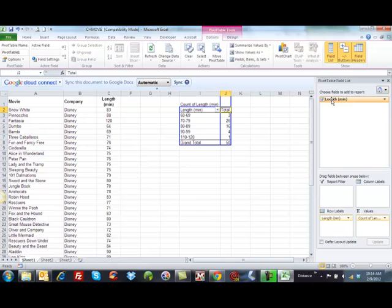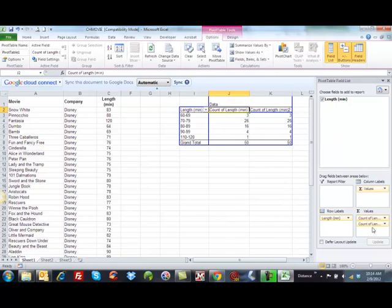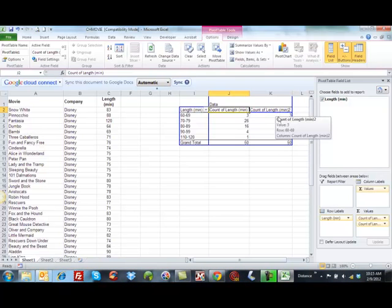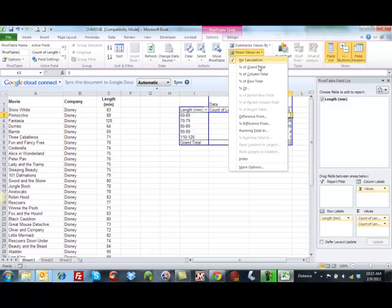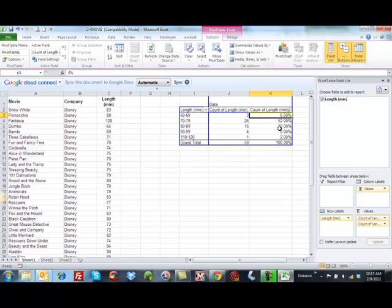I'm going to now calculate my relative frequencies. Again I'm going to take my lengths and drag it into values. And notice now I have two counts. Well I don't want this to be a count. I want this to change and be displayed as a percent. And I can do that by clicking here in the show value as a percent of the grand total. And so now I have my percentages in here.